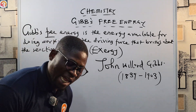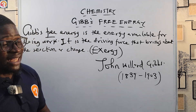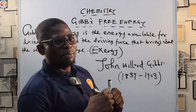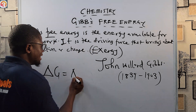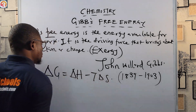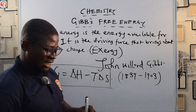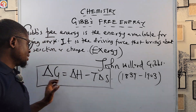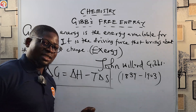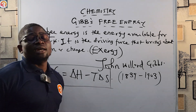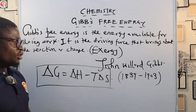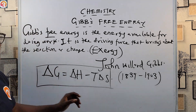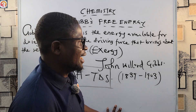Gibbs lived from 1839 to 1903. Now, mathematically, Gibbs free energy is represented by the formula: ΔG = ΔH − TΔS. This is a very vital formula. ΔG is the Gibbs free energy, ΔH is the enthalpy, T is the constant temperature, and ΔS is the change in entropy. Please memorize this formula — it is extremely important.